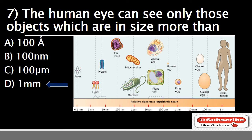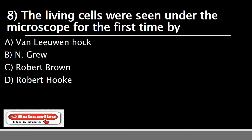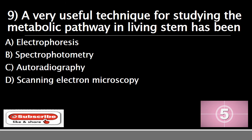Question number eight: the living cells were seen under the microscope for the first time by — A) van Leeuwenhoek, B) Engro, C) Robert Brown, or D) Robert Hooke. The correct answer is A) van Leeuwenhoek. He was the first man to witness a live cell under a microscope, and in 1674 he described the algae Spirogyra and also saw bacteria.